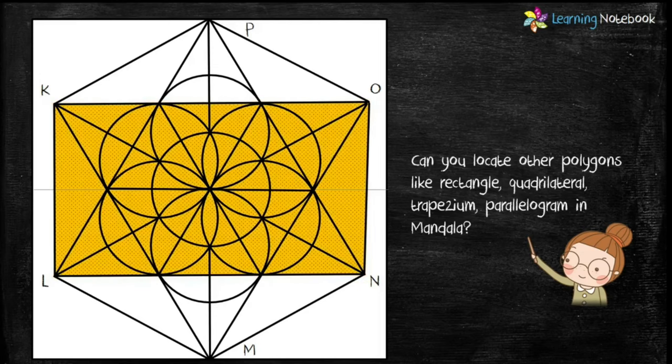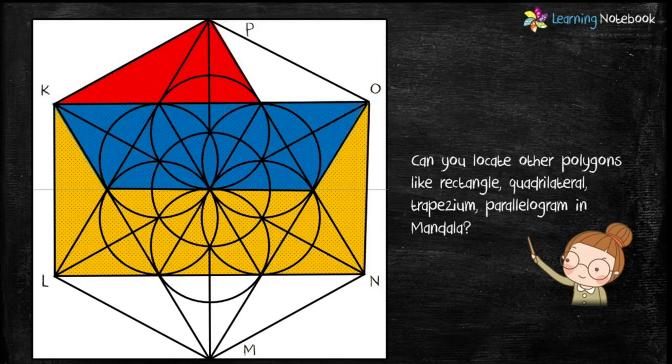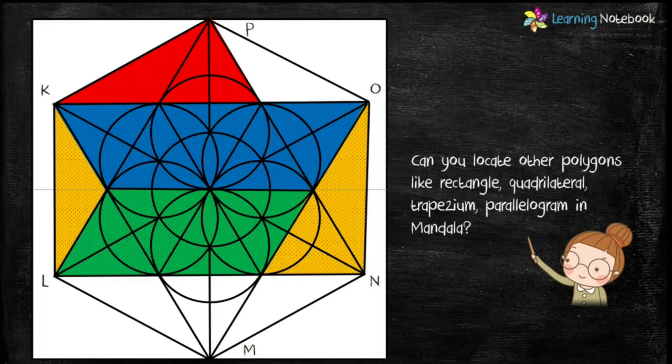This is a rectangle. This is a quadrilateral. Here it is a trapezium. And now, this is the parallelogram.